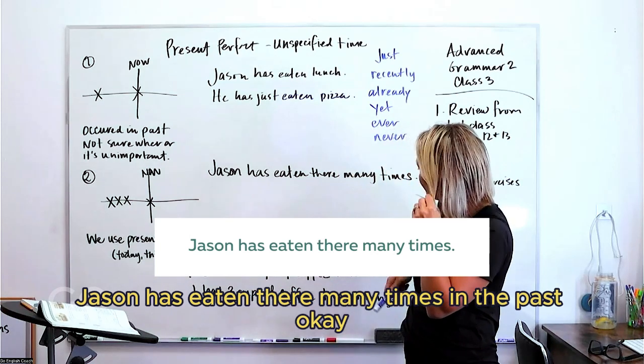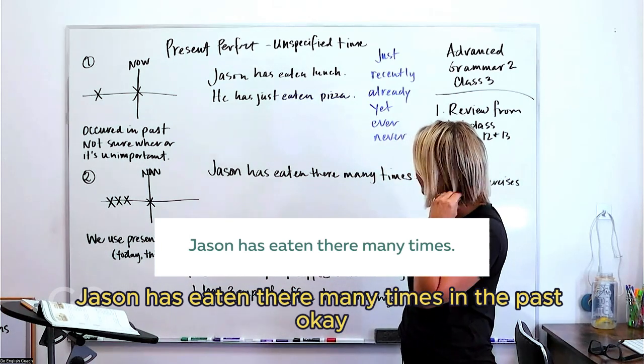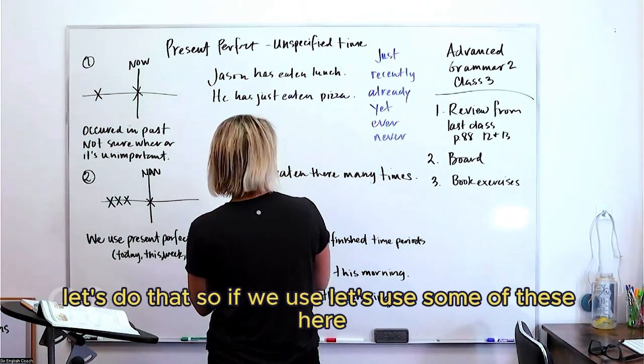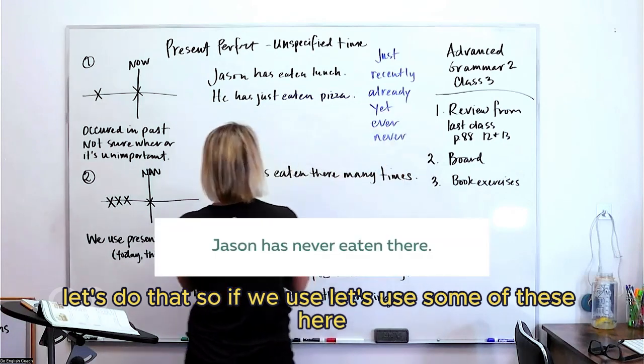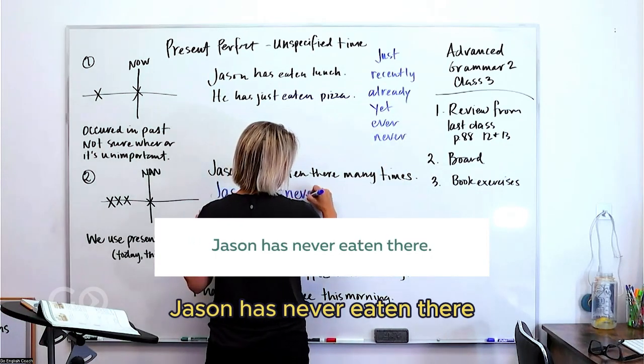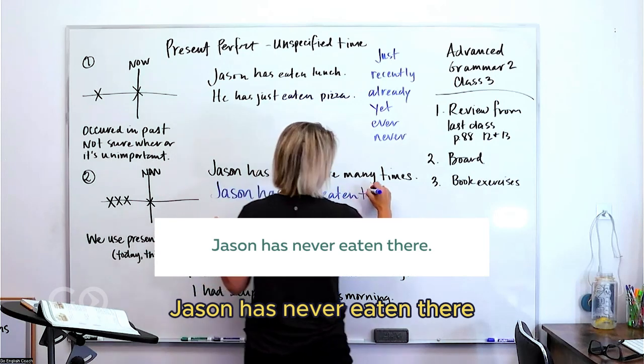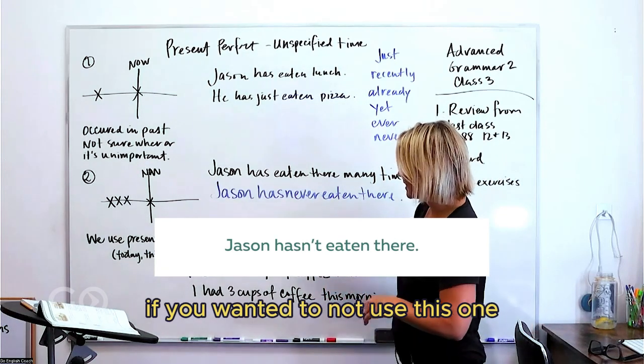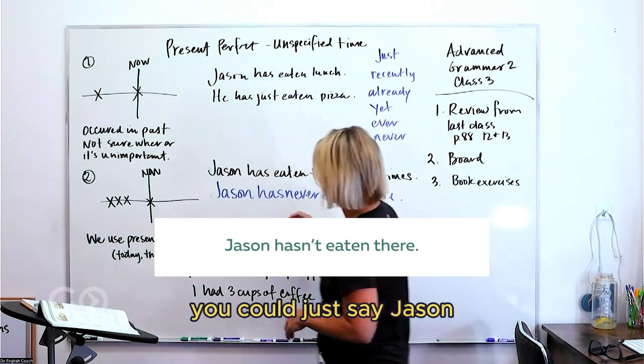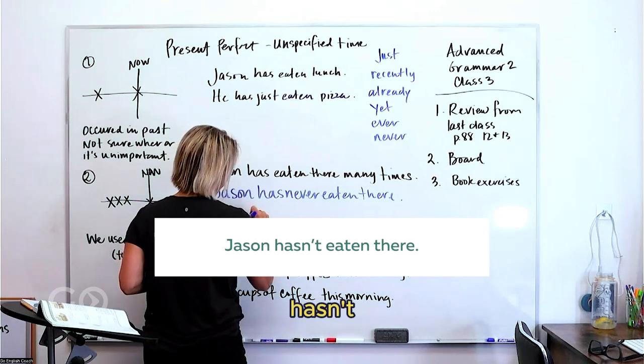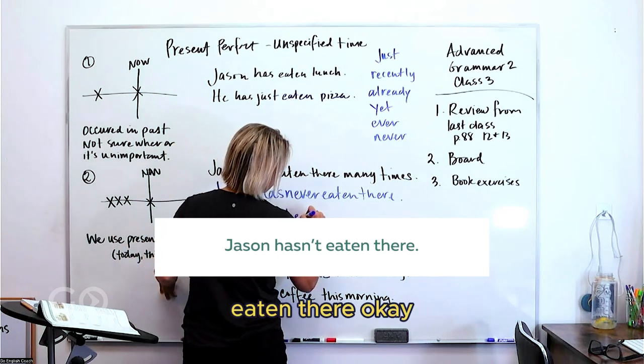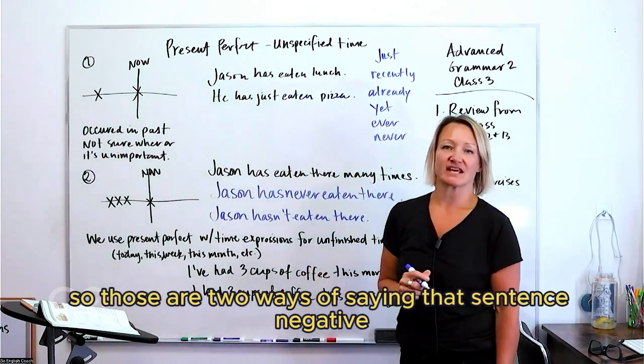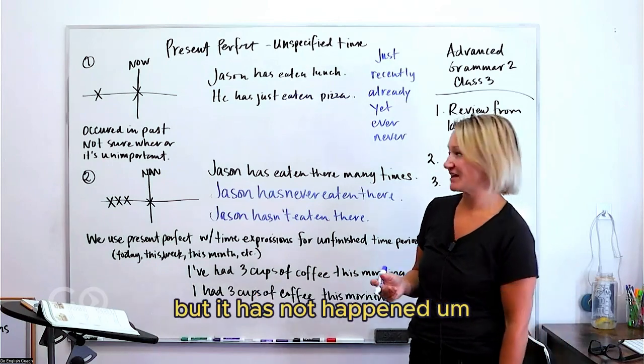Jason has eaten there many times in the past. Okay, if we want to see this in the negative, let's try that. So if we use some of these here, Jason has never eaten there. Okay, Jason has never eaten there. If you wanted to not use this one, you could just say Jason hasn't eaten there. Okay, so those are two ways of saying that sentence negative, but it has not happened.